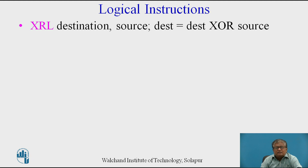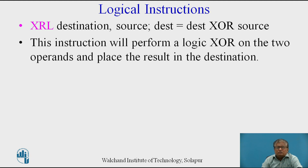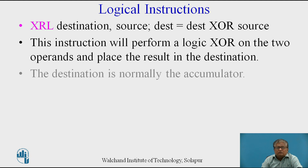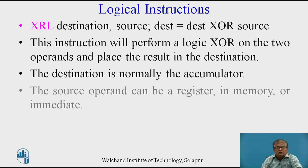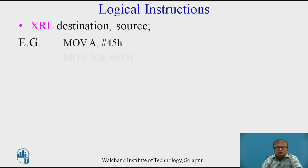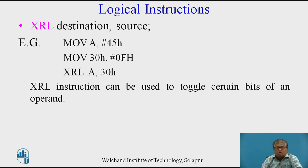The XRL instruction is used to perform the XOR operation. The syntax is the same — it performs a logical XOR operation. The destination is the accumulator only; the source operand can be a register, memory, or immediate, and it supports all addressing modes. Example: XRL A, 30H — the value at address 30H is 0FH, so 0FH will be XORed with the value in A, which is 45H. This instruction can be used to toggle certain bits of an operand.